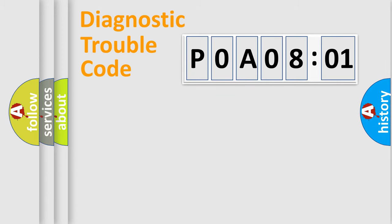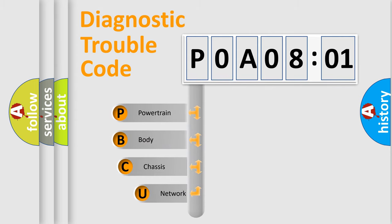Powertrain, Body, Chassis, Network. This distribution is defined in the first character code.